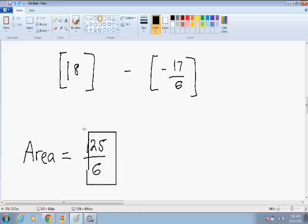So this is the exact area in between the curve x plus 3 and the curve x squared minus 6x plus 9.